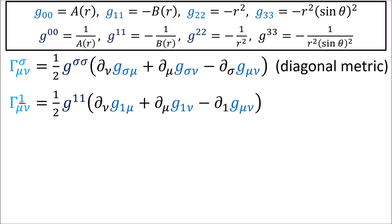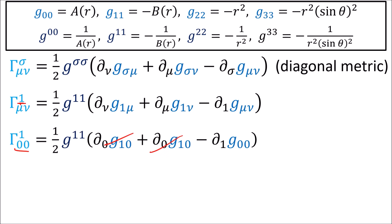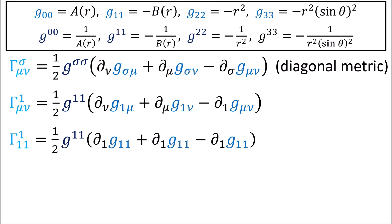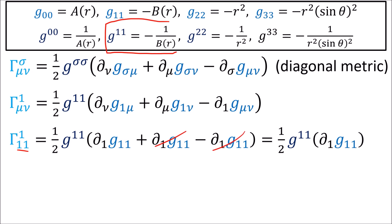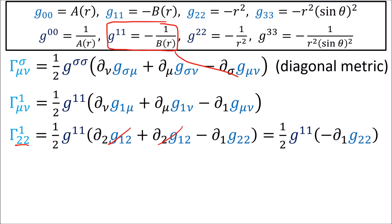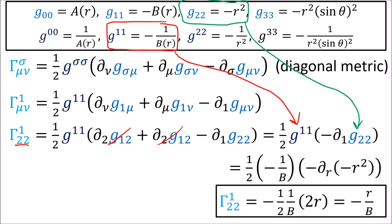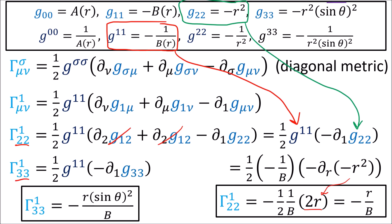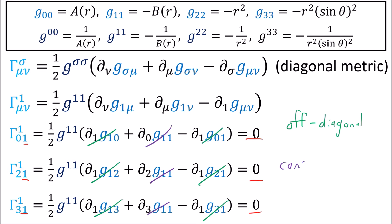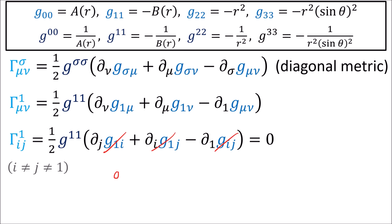For coefficients with 1 on top: with 0,0 on the bottom we get negative 1/b times the r-derivative of a. For 1,1 on the bottom, terms cancel and we get negative 1/b times the r-derivative of negative b. With 2,2 on the bottom we get negative r/b, and for 3,3 on the bottom we get the same thing multiplied by sine squared. When one of the lower indices is 1, all coefficients go to zero, either because they're off-diagonal or constant with respect to the derivative. Any other mixed lower indices also give off-diagonal metric components, so they go to zero.